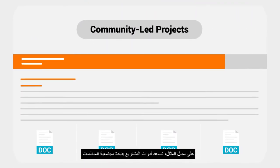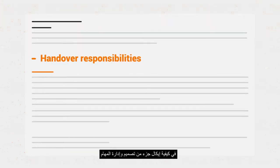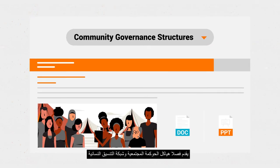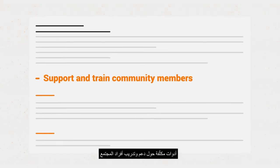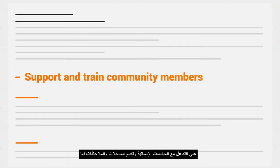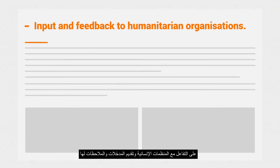For example, the tools for the community-led projects guide the organisation in how to hand over some of the project design and management responsibilities to the displaced community. The Community Governance Structures and Women's Coordination Network chapters have extensive tools for how to support and train community members in interacting with and providing input and feedback to humanitarian organisations. The tool Community Structures' Roles and Responsibilities was applied in 15 spontaneous settlements and shelters monitored by IOM. Combining these tools with focus groups, we were able to support the strengthening of the role of female leaders and empowering women in general.